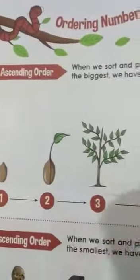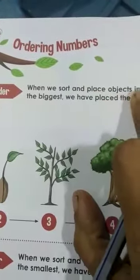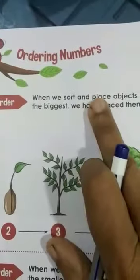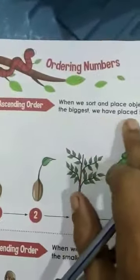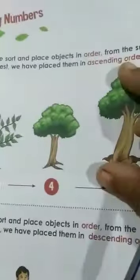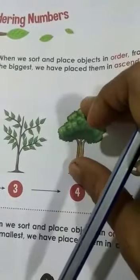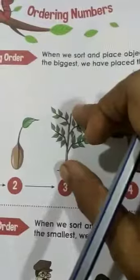So what is the meaning of ascending order? To make you understand, they have shown a picture. When we sort and place objects in order from the smallest to the biggest, that is called ascending order. Here you can see a seed, then a sprout, then it has become a small plant, and it has grown into a bigger tree, and then the biggest tree. So when arranging in ascending order, you go from the smallest to the biggest.